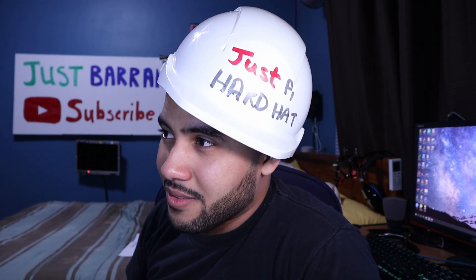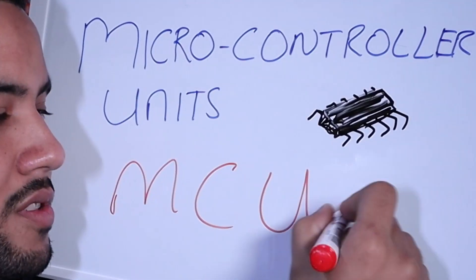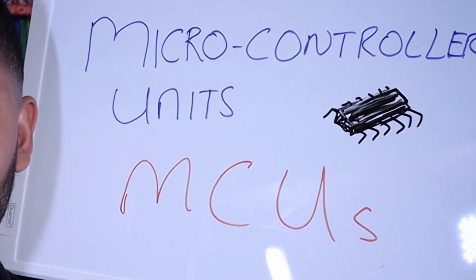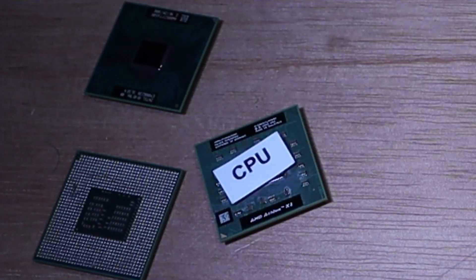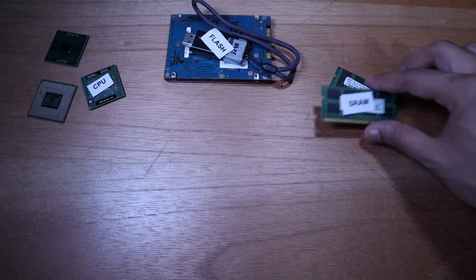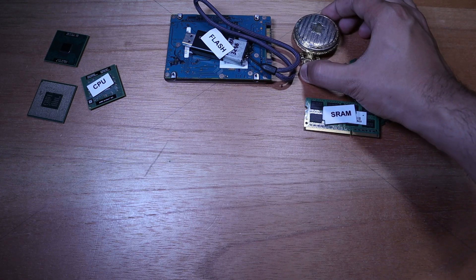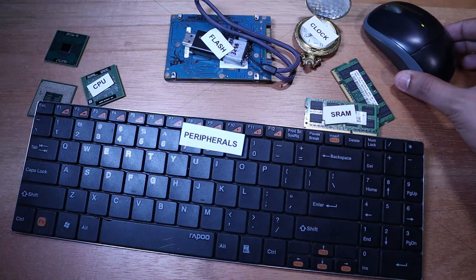Microcontroller units, or MCUs for short, are small programmable computers on a single integrated circuit. This is an integrated circuit, if you didn't know. They contain everything you need to run a small programmable task — they have their own central processing unit or CPU, memory, RAM, a clock, and peripherals.